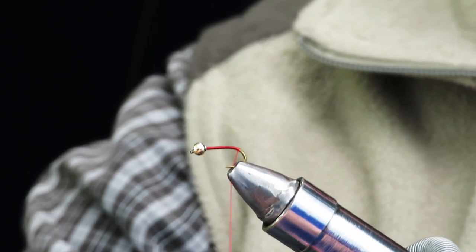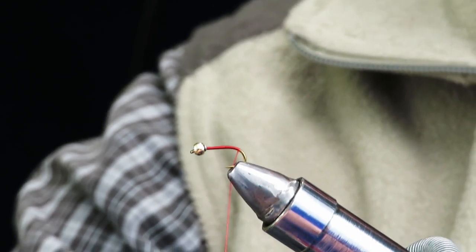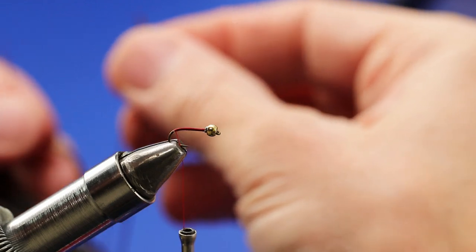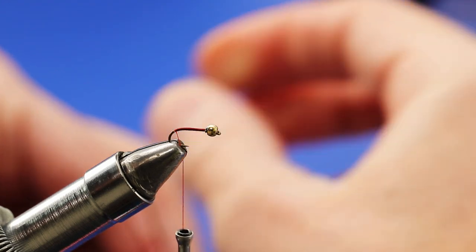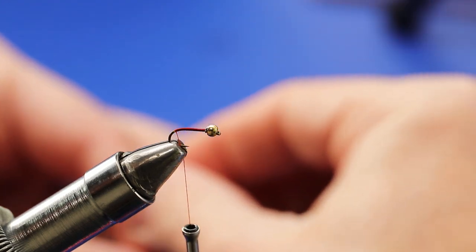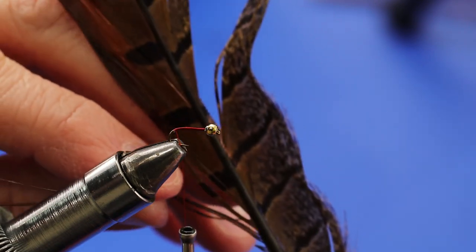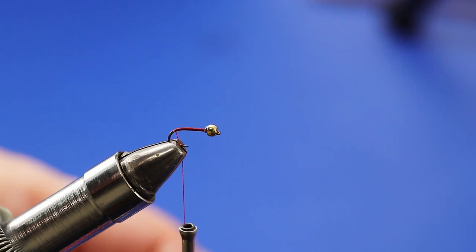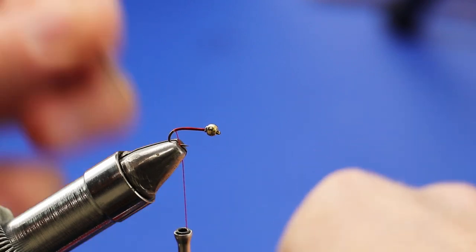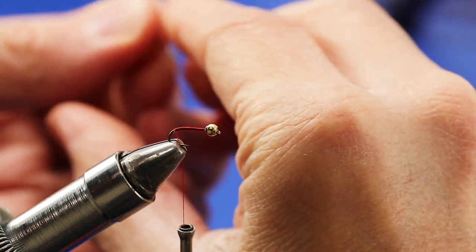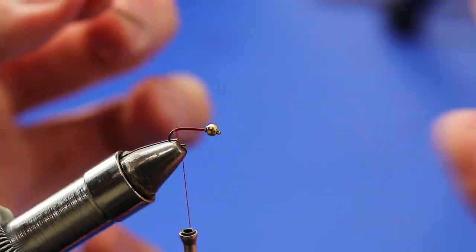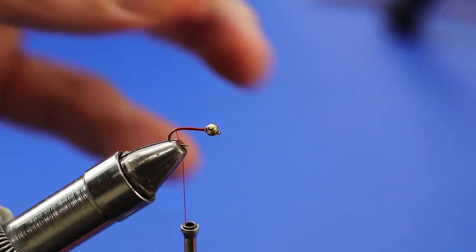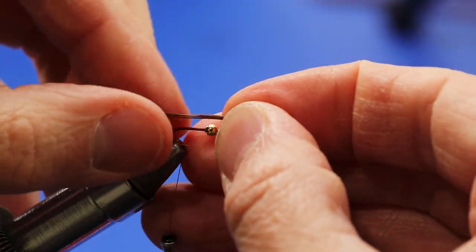Now I guess the traditional recipe for this fly would call for Coq de Leon fibers for the tail. Well that stuff is really expensive when you can find it, so I've taken to using just normal pheasant rooster tail. I take about four of these fibers, cut them evenly off the feather there. You can see I'm left with almost a three inch long set of fibers here. I don't need near that much so just to make my life easy I'm going to snip off about half that length off the butt ends.